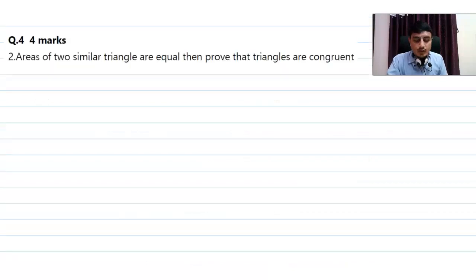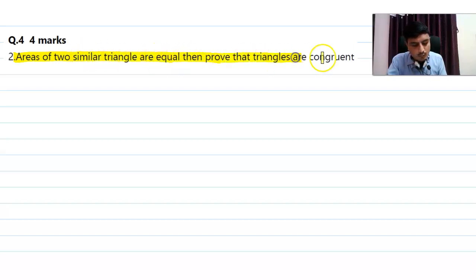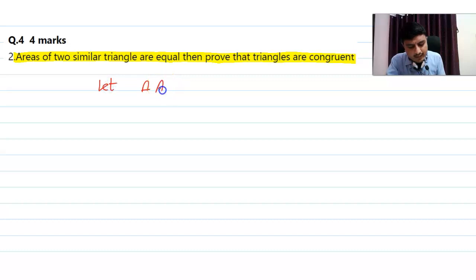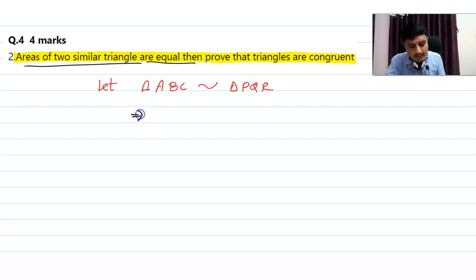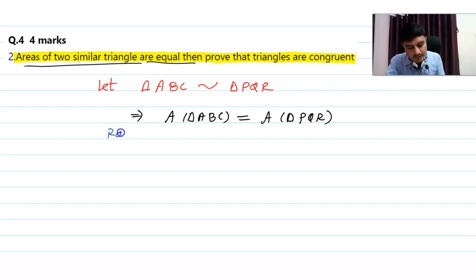Question 4.2: If the areas of two similar triangles are equal, prove that the triangles are congruent. Given: triangles ABC and PQR are similar, and area of triangle ABC equals area of triangle PQR.